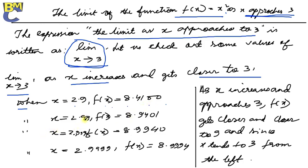When x is 2.99, f(x) is 9. When x is 2.9, f(x) is this much. When x is 2.99, this one. When x is increasing and gets closer to 3, f(x) also increases and gets closer to 9.